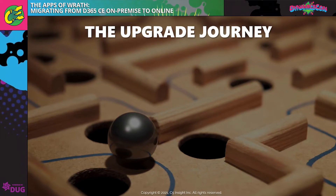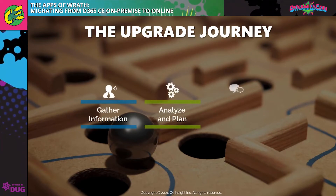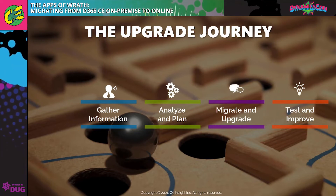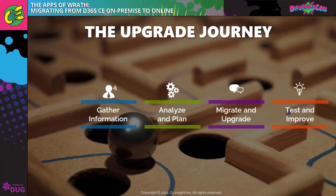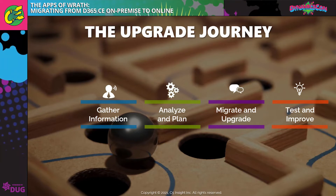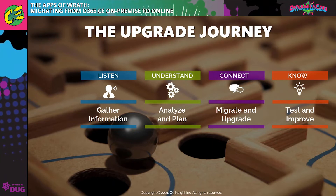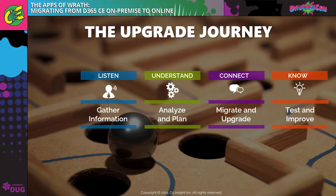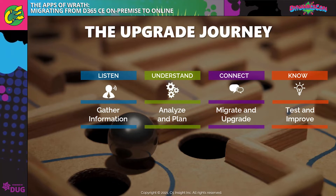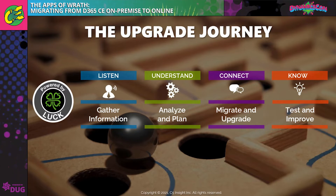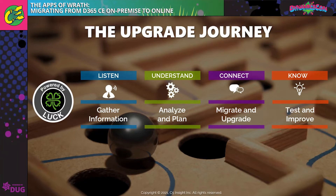So let's talk about what the upgrade journey looks like. I've broken this down into four steps: how do you gather information, how do you analyze it and create a plan, how do you execute and migrate, and what should you expect on the other end — how do you test and improve? Another way of saying these four things: listen to your team, understand what you need, connect to execute your plan, and know your results so you can continuously improve. We call that being powered by LUCK, and it's at the core of every human relationship and every system created to enhance human relationships — CRM certainly being one of the more important ones.